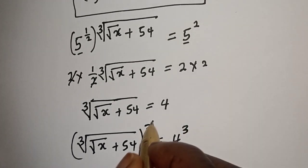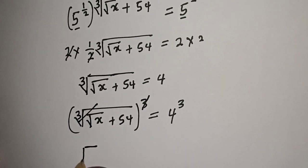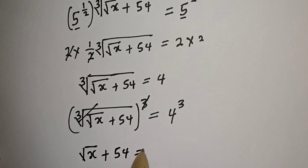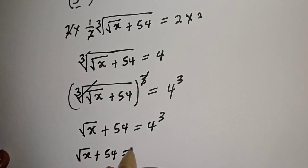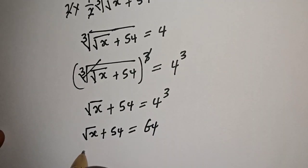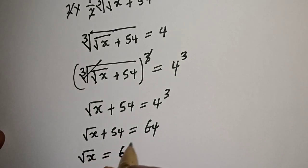Cubing cancels the cube root, and we are left with square root of s plus 54 is equal to 4 cubed, which is 64. So square root of s plus 54 equals 64. Bringing 54 to the other side: square root of s is equal to 64 minus 54.